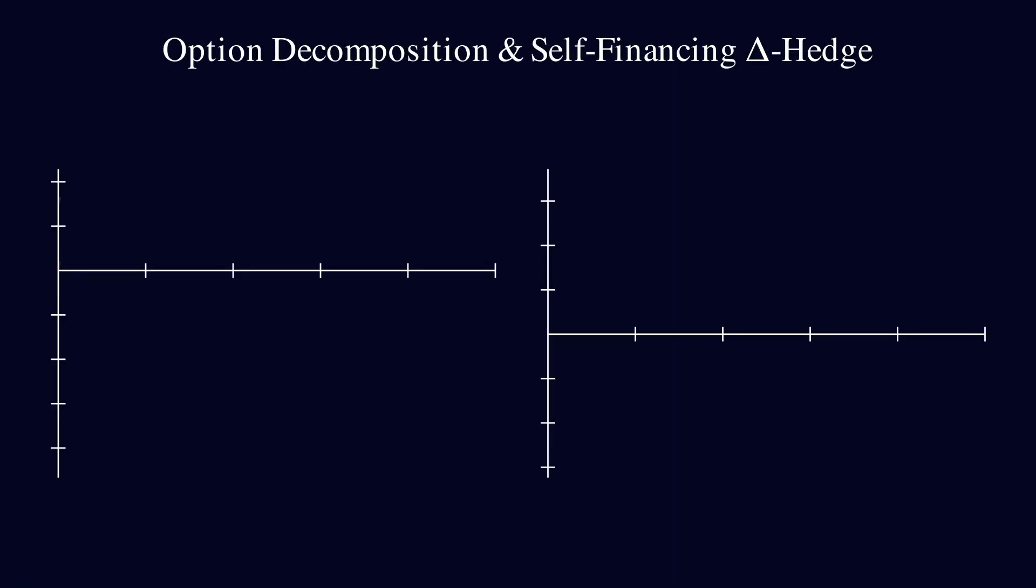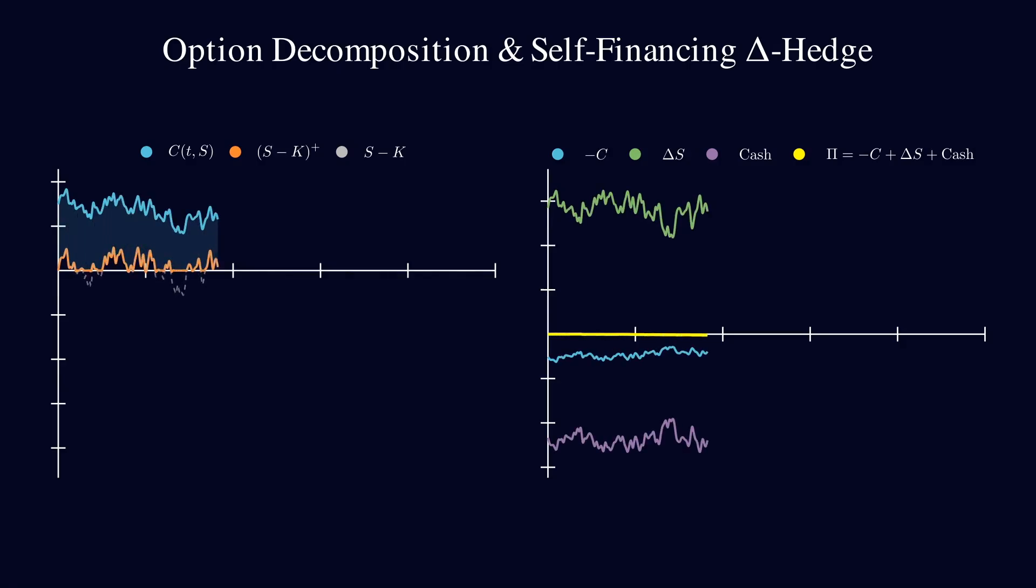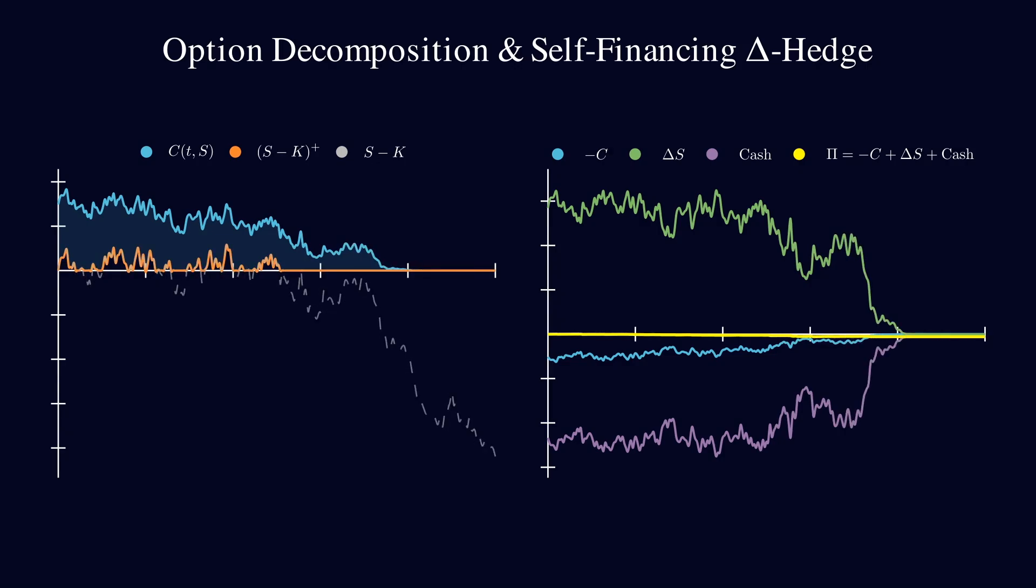Now, in the second example, the option is out of the money. The stock price ends up well below the strike price, so the option becomes worthless. And when this happens, the option price barely reacts to the stock price at all. Its sensitivity drops close to zero. That means a delta is very low, and we don't need to hold much or any stock. You can see in the plot that the green line, the stock we hold, also drops to zero.